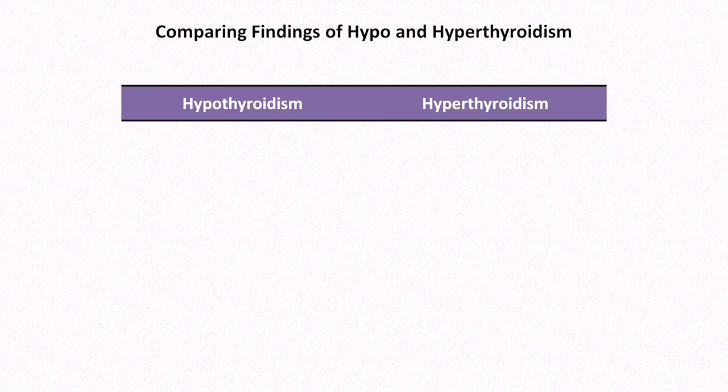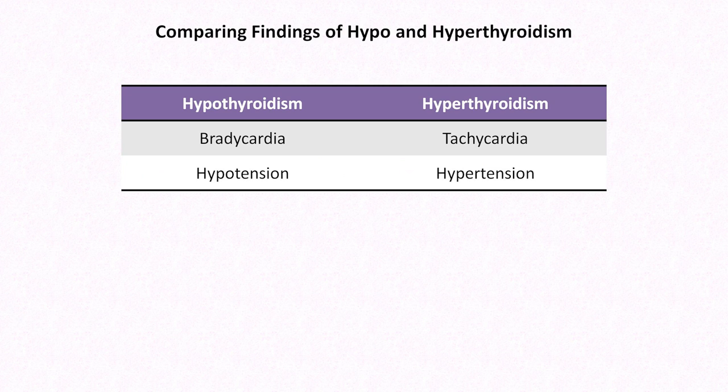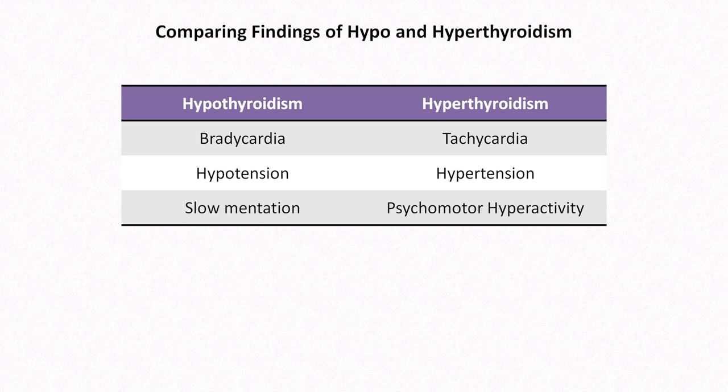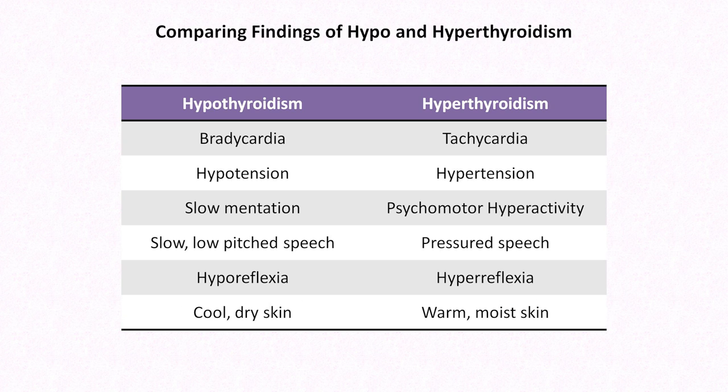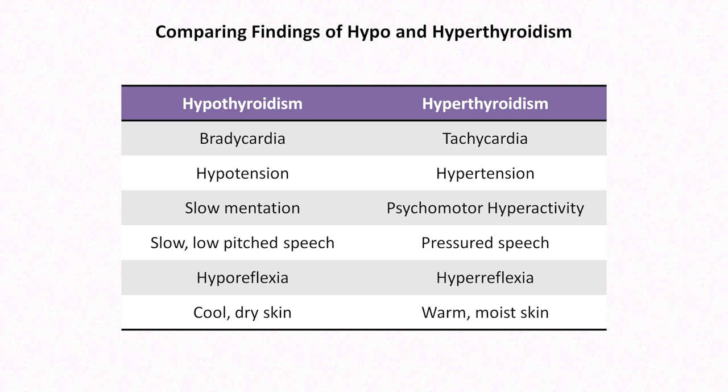There are strong parallels between the findings of hypo- and hyperthyroidism. Remembering that the two diagnoses have many opposite findings will help to remember each's presentation. When comparing hypothyroidism to hyperthyroidism: bradycardia vs. tachycardia; hypotension vs. hypertension; slow mentation vs. psychomotor hyperactivity; slow low-pitched speech vs. pressured speech; hyporeflexia vs. hyperreflexia; cool dry skin vs. warm moist skin; and coarse hair vs. fine abundant hair.